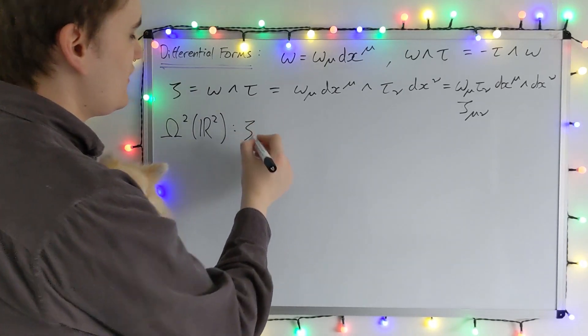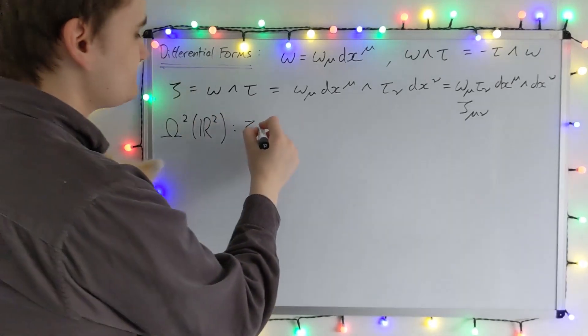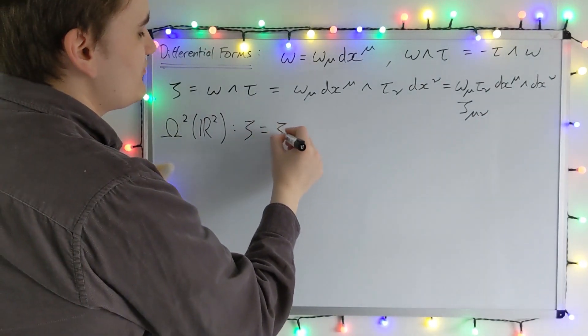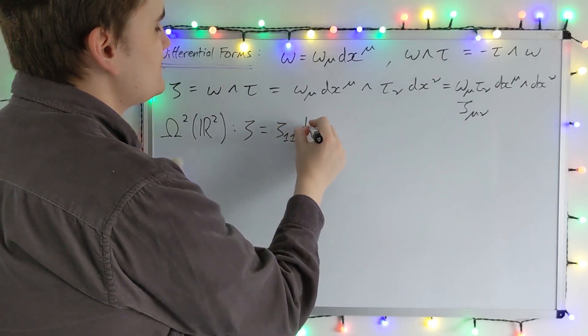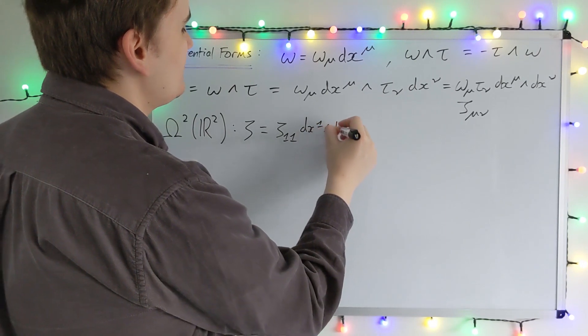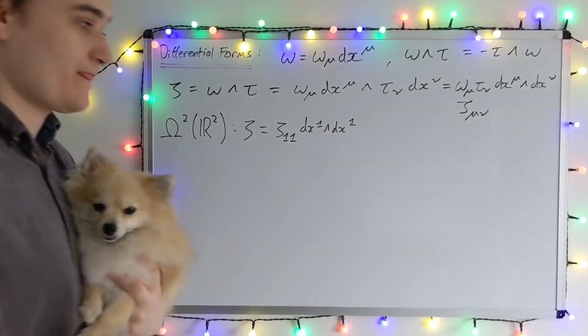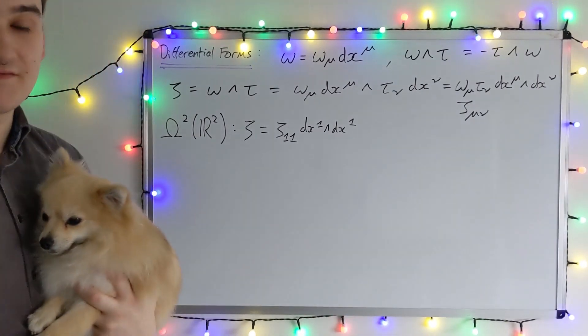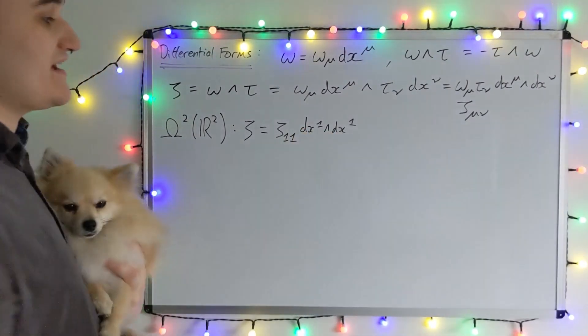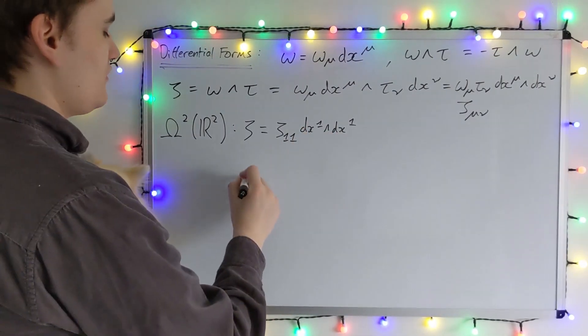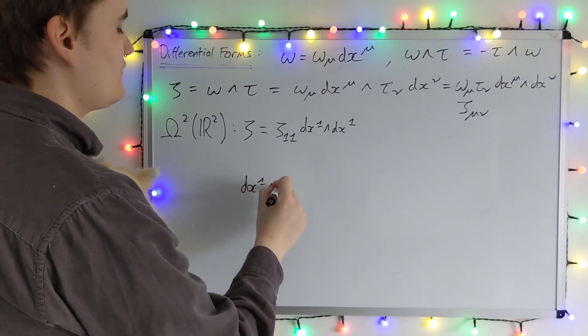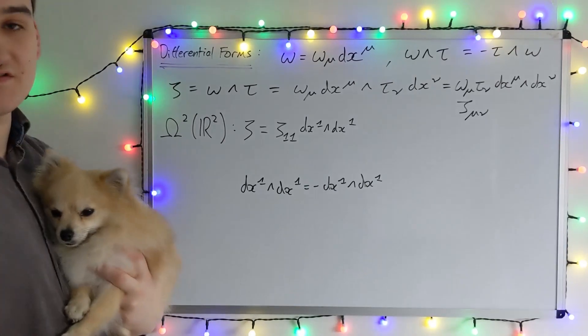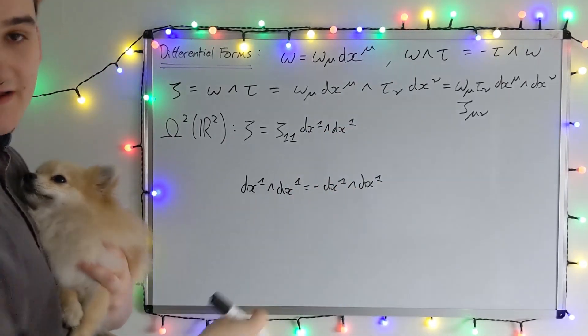So if I were to just fully write out now zeta using the sum convention, the first term will be zeta 1 1 dx 1 wedge dx 1. And now let's realize something about this term. It's actually going to vanish. This dx 1 wedge dx 1, we know by anti-symmetry. Okay, so this is just using the anti-symmetry of the wedge product. We pick up a minus sign.